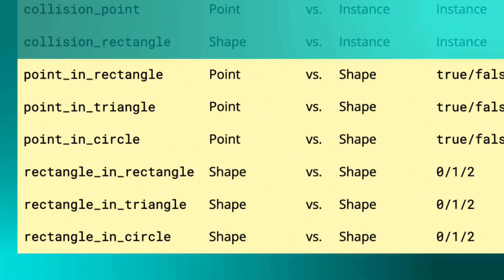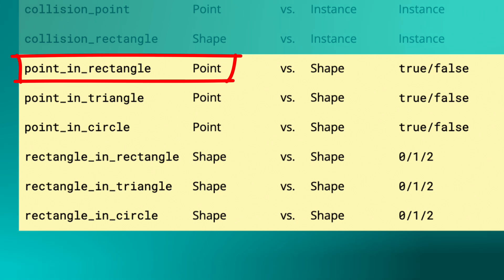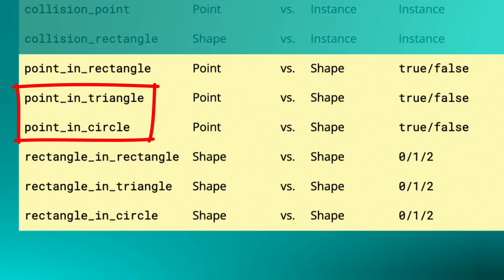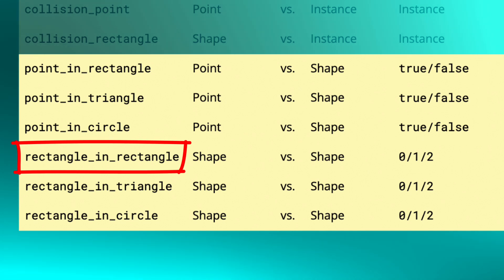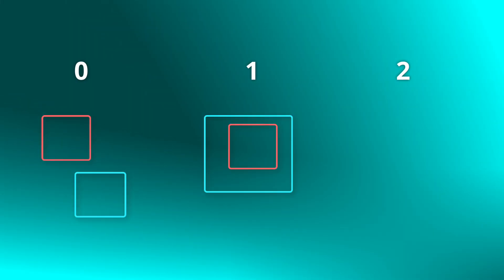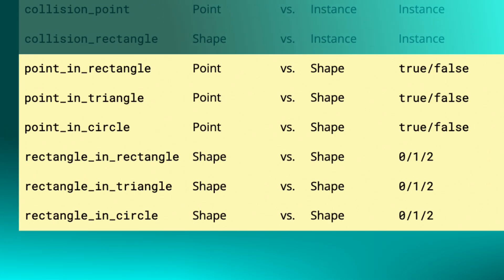GameMaker also has functions for checking if two shapes are overlapping — shape versus shape with no instance masks involved. These are the six shape-versus-shape functions: point_in_rectangle checks if a given point is inside a given rectangle; point_in_triangle and point_in_circle work the same way. All of these return true or false based on whether the point is inside the given shape. Then there's rectangle_in_rectangle, which checks if two rectangles are overlapping and can give three answers: 0 if they don't overlap, 1 if the first rectangle is completely inside the second, and 2 for any other case of overlap. rectangle_in_triangle and rectangle_in_circle work the same way.